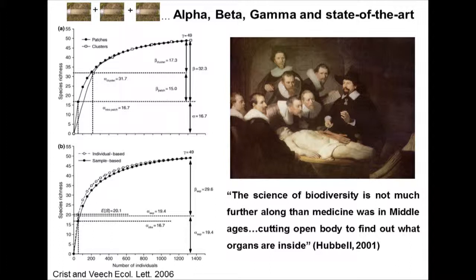Beta diversity is the connection between alpha and gamma. I like to cite the provocative book on the neutral theory of biodiversity and biogeography by Stephen Hubbell, more than ten years ago, where he said that the science of biodiversity is not much farther along than medicine was in the Middle Ages — just cutting open a body to find out what organs are inside. This calls us to see whether in these ten-plus years we have been able to progress, and I think we can say more than that, actually.